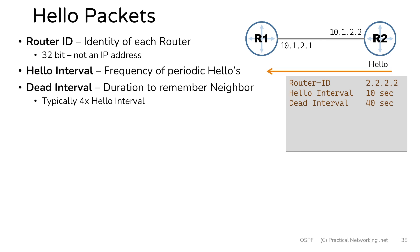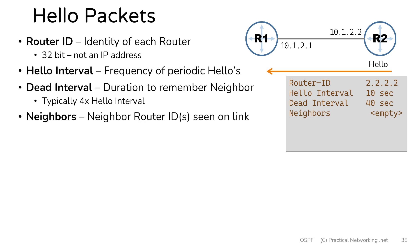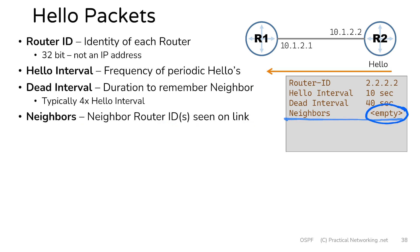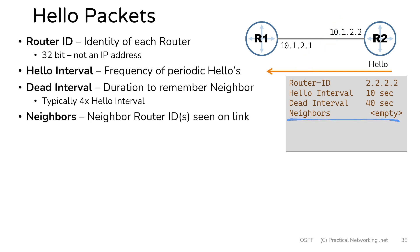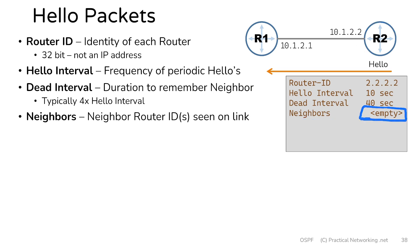The next piece of information inside a hello packet is the neighbors field. The neighbors field is going to include any other neighbor router IDs seen on the link. At the moment, router 2's neighbors field in its hello packet is empty, because at this point router 2 has simply sent hello packets — it hasn't received anything from router 1. So router 2 doesn't know that anyone else actually exists on this link. At some point, router 1 is also going to start sending hello packets, and after that point, router 2's neighbors field is going to include router 1's router ID.